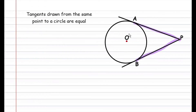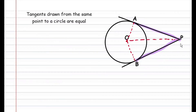Before doing this we have to construct some lines. The first line we're going to construct: we join the points O and A, then we join the point O and B, and then we also join the points O and P. Now that we have joined all these points, you will notice that we have two triangles. In order to prove that these two lines are equal, we're going to try and prove that these triangles are congruent.